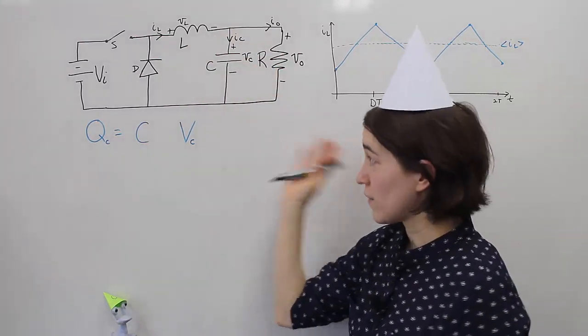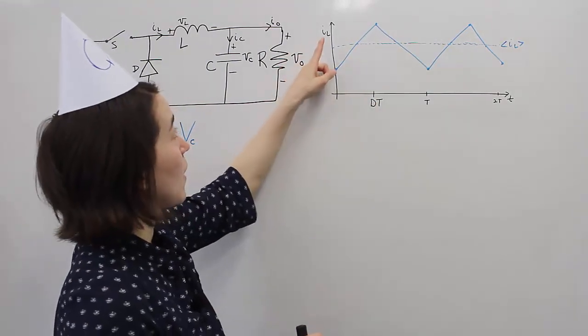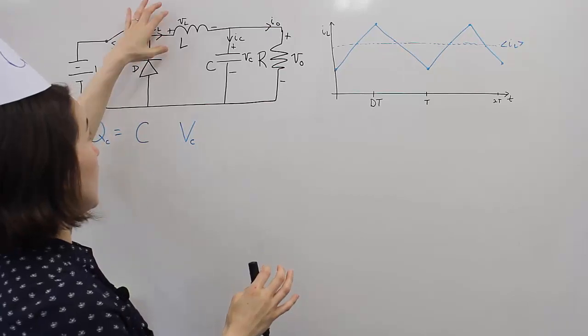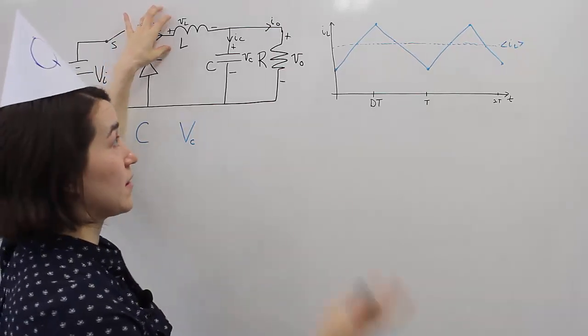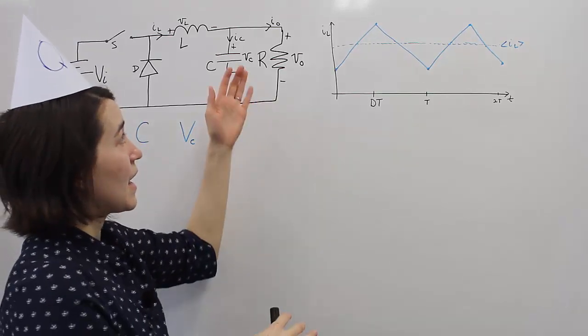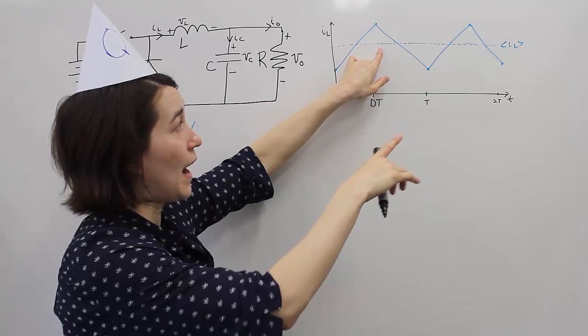And I've drawn the waveform over here. So here's our inductor current. It's going to be a triangle wave because of the inductor properties and the fact that we're switching between two different states.